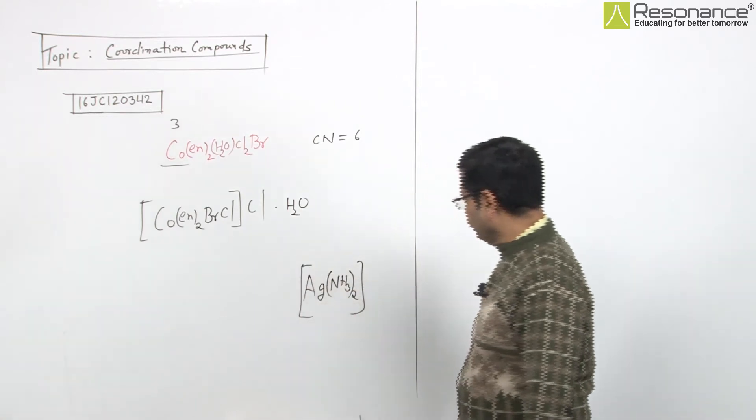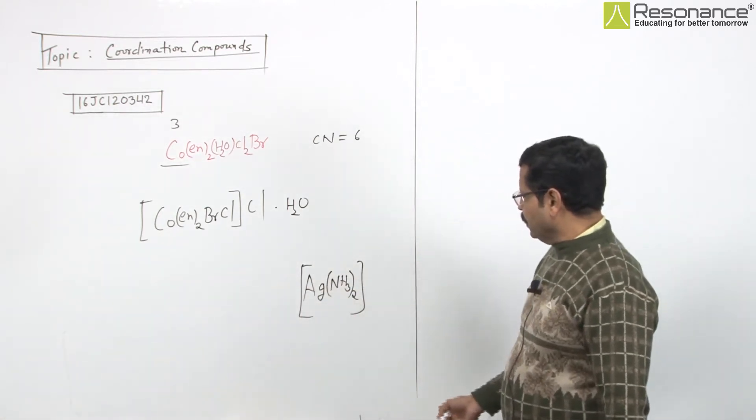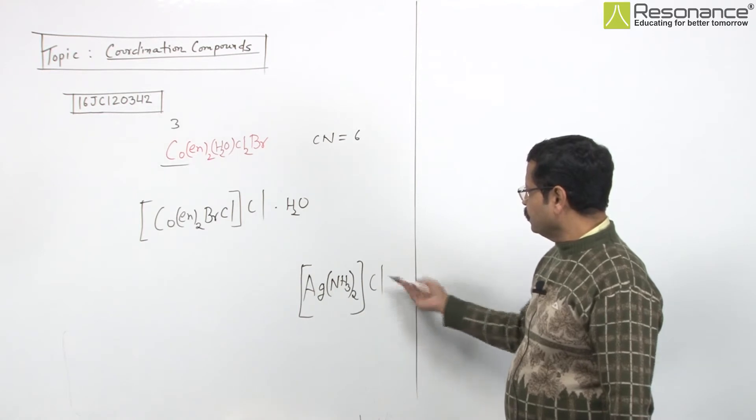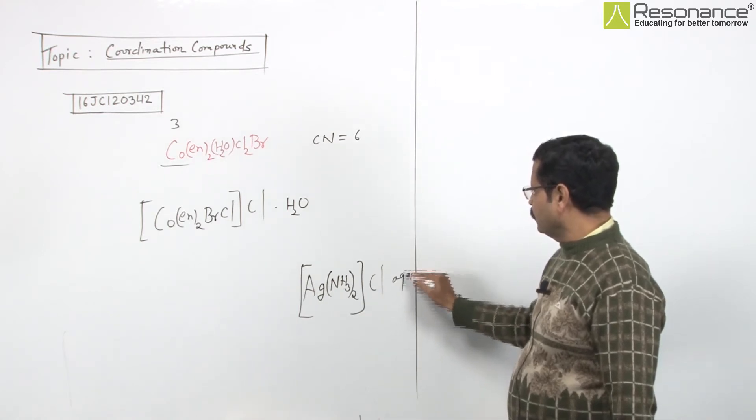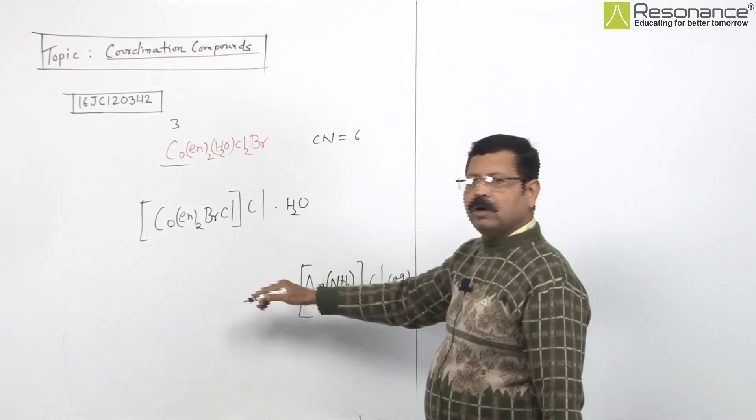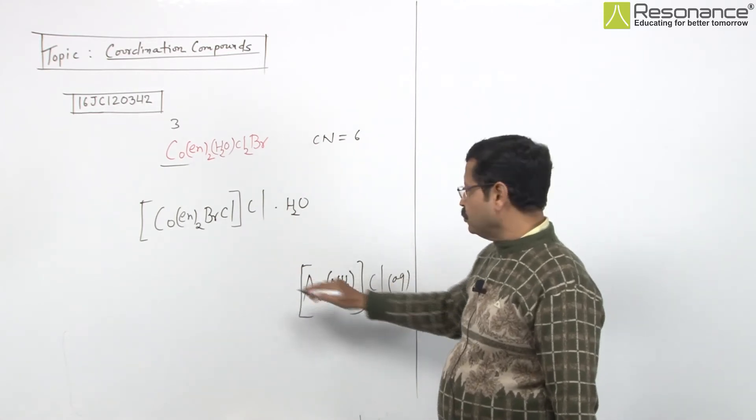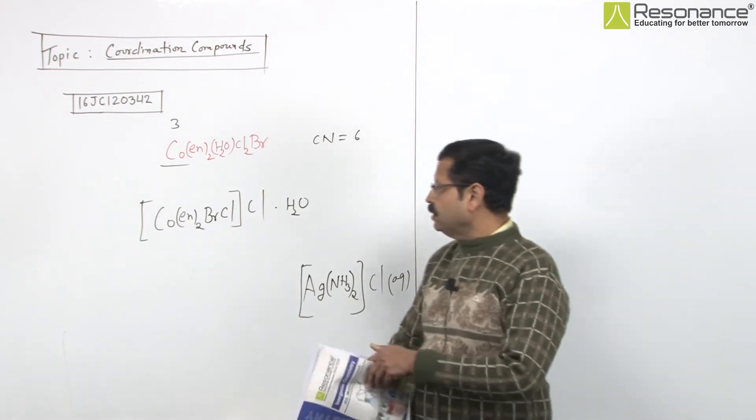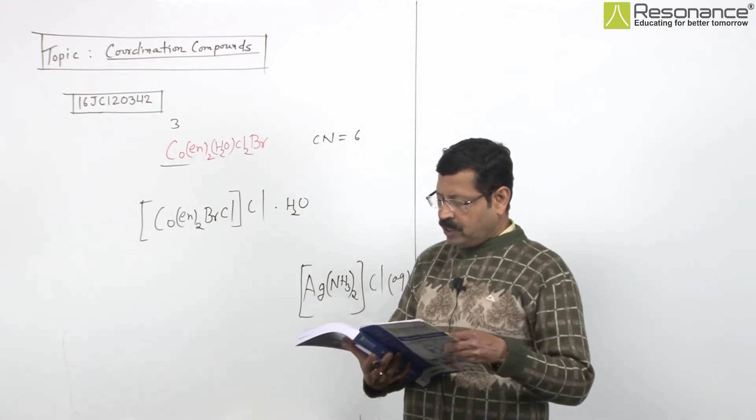It's soluble in ammonium hydroxide or NH3·H2O. AgCl precipitate with AgNO3 becomes soluble in ammonium hydroxide or NH3·H2O forming this complex. Now what's asked about this?